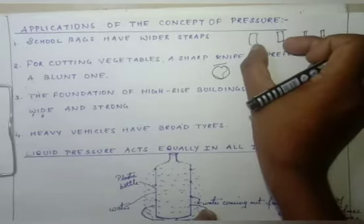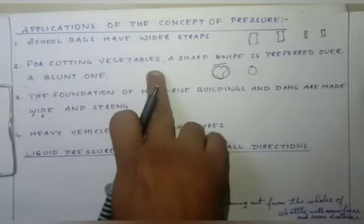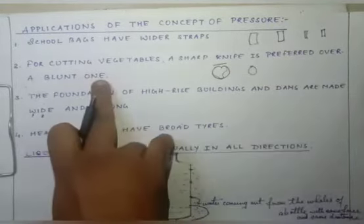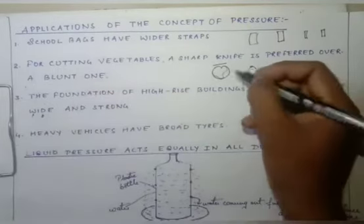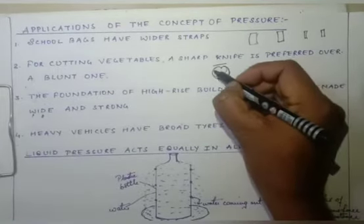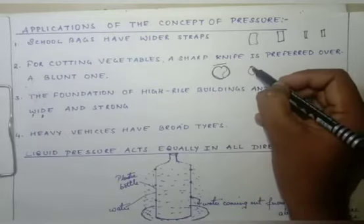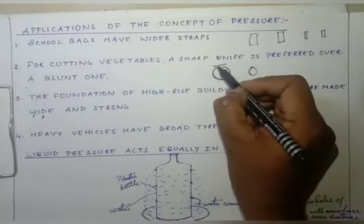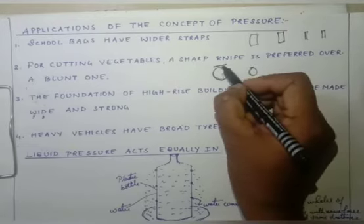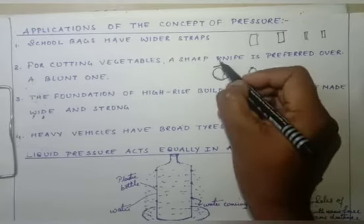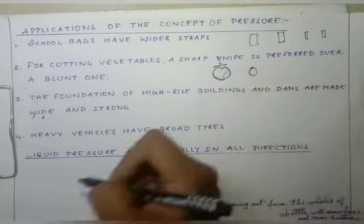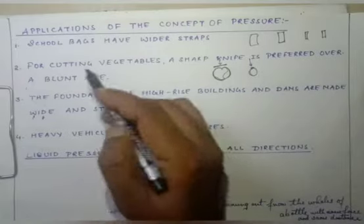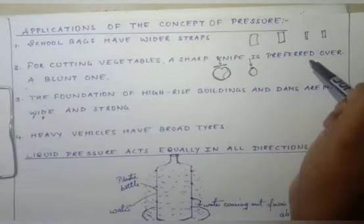The second application: for cutting vegetables, a sharp knife is preferred over a blunt one. Here you can see that for a blunt knife the area of cross-section is more, so less pressure is applied. For a sharp knife the area of cross-section is less, so more pressure is applied. That is why for cutting vegetables a sharp knife is preferred over a blunt one.